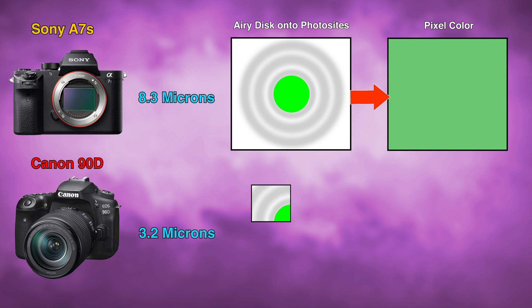And so what happens is the airy disk is broken up into different parts among different photo sites, and as the camera begins to translate this into actual pixels, there's a higher likelihood that those pixels would be different in those shades of green.